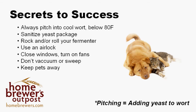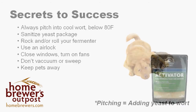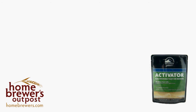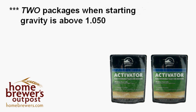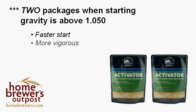Don't vacuum or sweep the floor before you pitch in yeast, because this will kick up critters that you don't want in your beer. Try to keep any pets away from the area that you brew in. One package of yeast is usually enough to ferment your beer. However, we recommend increasing the amount of yeast you pitch into beers that are above 1.050 starting gravity to two packages of either liquid or dry yeast. This will ensure a faster start to your fermentation, a more vigorous fermentation, and a cleaner, less sweet finished beer.